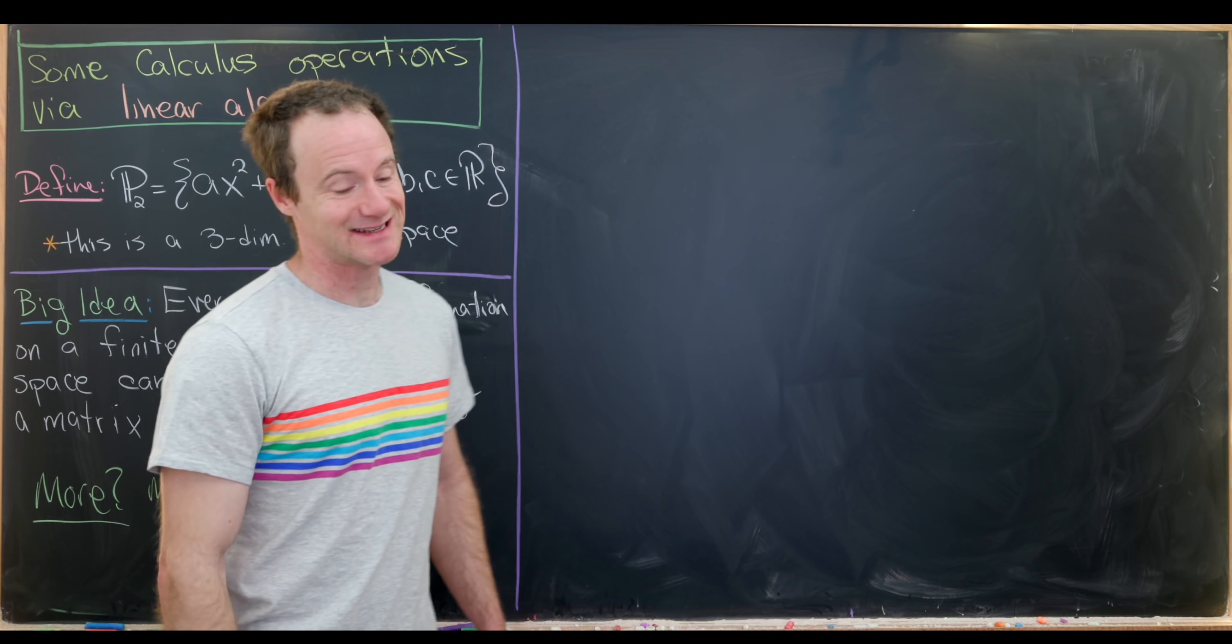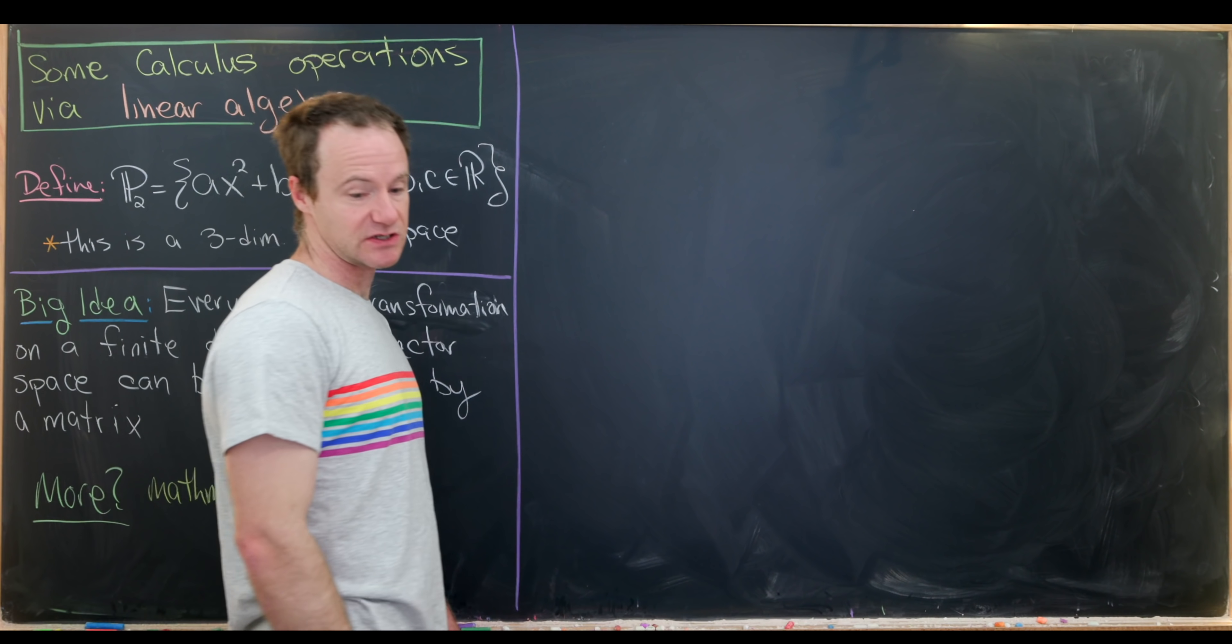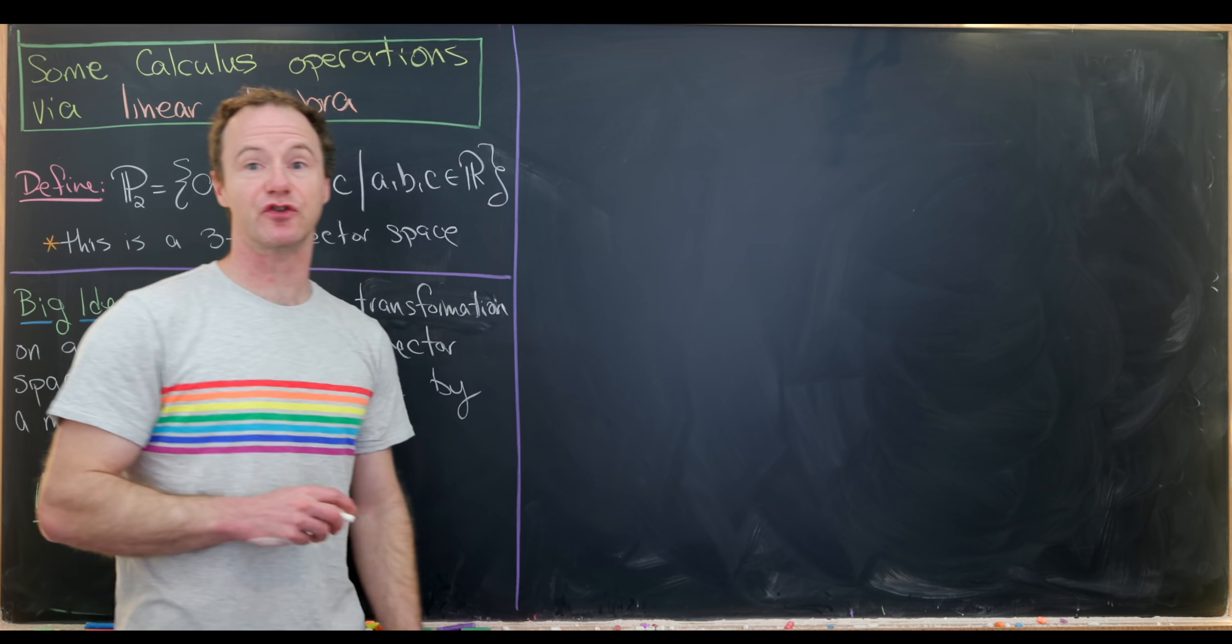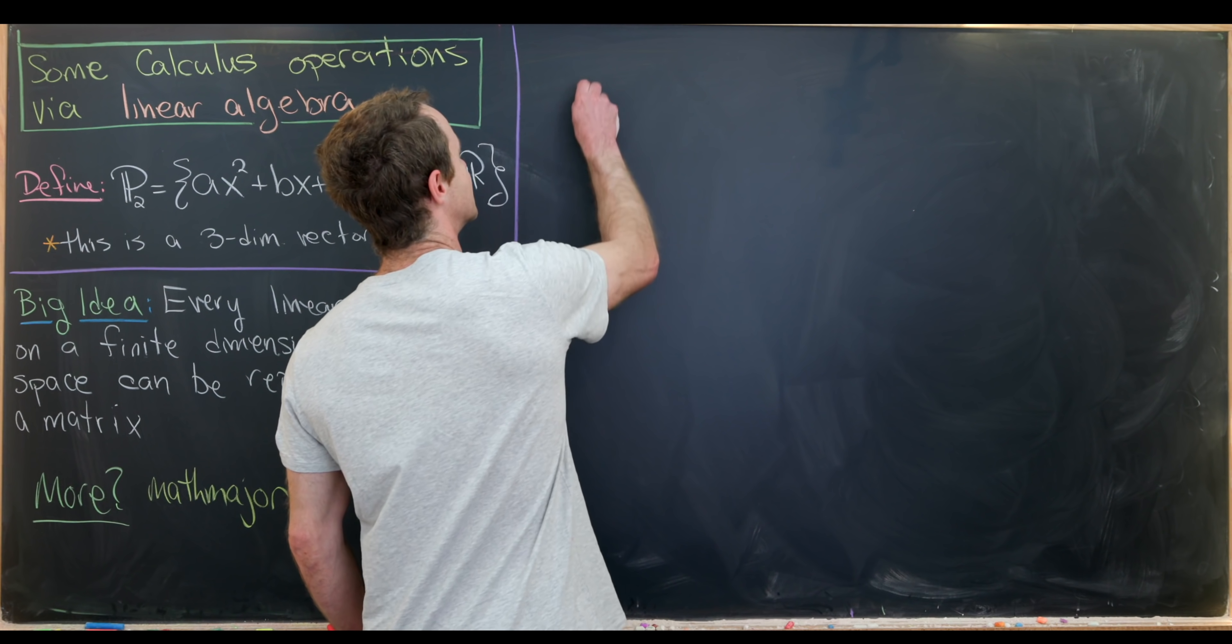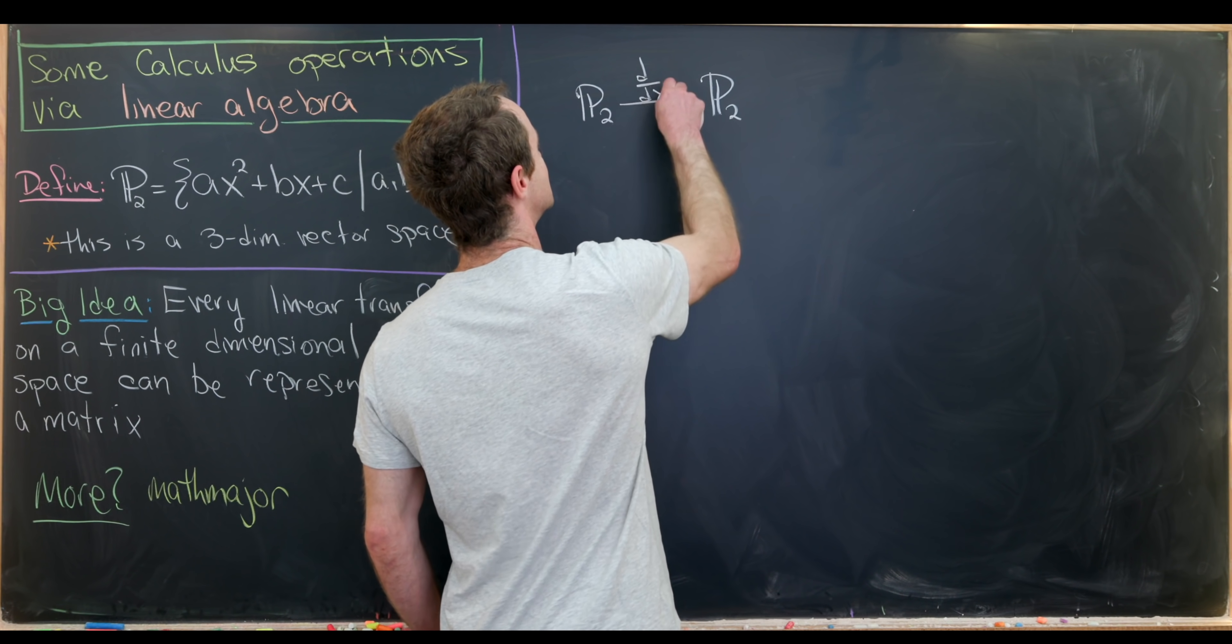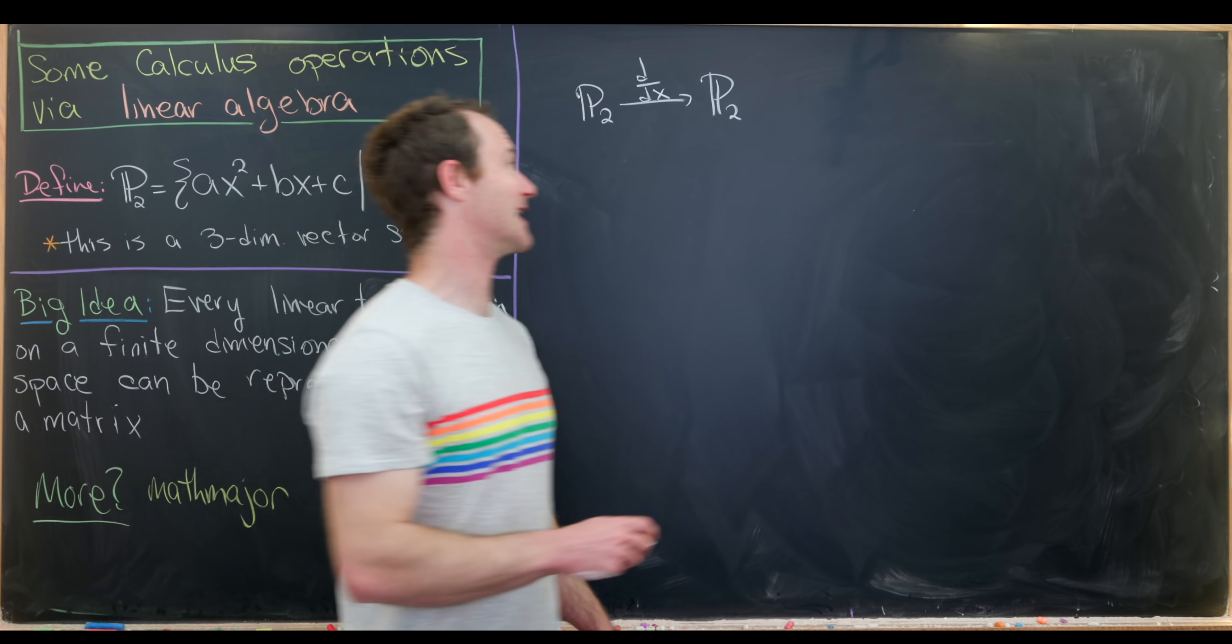Let's get into our first example built off of this polynomial vector space P2. Maybe the most classic thing to do with this first, since we're thinking about calculus, is to see what the derivative operator does. In particular, we're looking at P2 and thinking about a map that goes from P2 to P2, which is given by the derivative. So this is maybe a picture of the spaces. And over here, I'll do a picture of the elements.